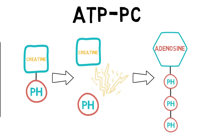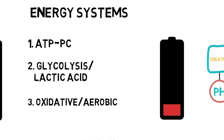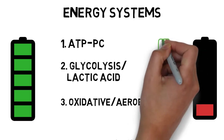This is the fastest and easiest way to resynthesise ATP. However, the major drawback to the ATP-PC system is that the body only has about 8 to 10 seconds worth of PC stores. Once these have been used, the body will not be able to maintain this intensity and method of ATP resynthesis unless it stops and rests. This is why we can only sustain high intensity activities such as sprinting or jumping for short periods of time.